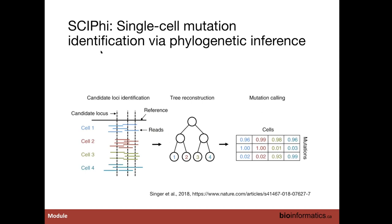Another method is SCI-FI, which is more relevant because we'll be using a SCI-FI-inferred tree in our lab. This is a slightly different approach: they propose a model incorporating both read-level data and tree modeling of mutation presence/absence across cells. In a combined fashion, they call presence or absence of particular SNVs in each cell and reconstruct the tree simultaneously in an integrated way, calling mutations by doing posterior inference over the inferred model.